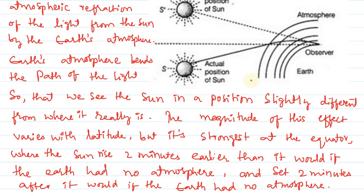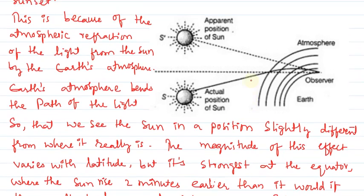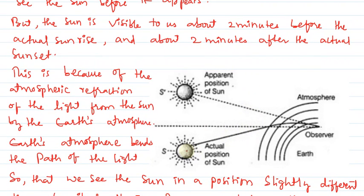So this ray diagram — if you see, this is the actual position of the sun, this is the horizon, this is the observer, these are the layers of atmosphere surrounding the earth, and this is the apparent position — the position which the sun appears to an observer. I hope you have understood the explanation. Thank you.